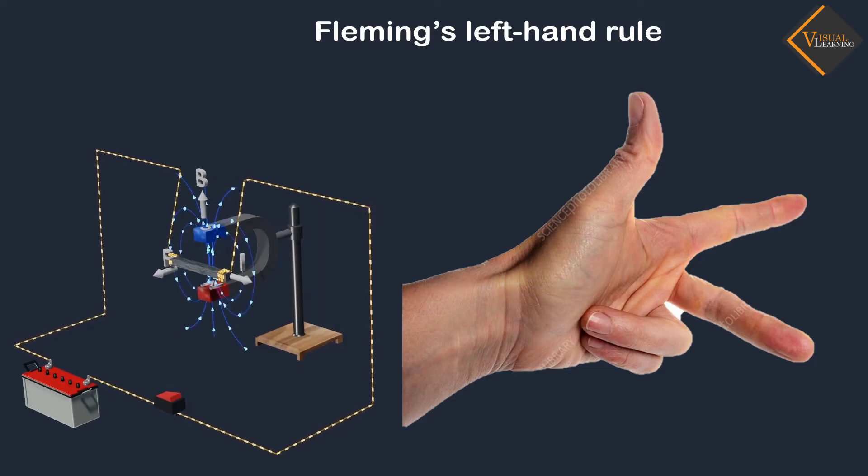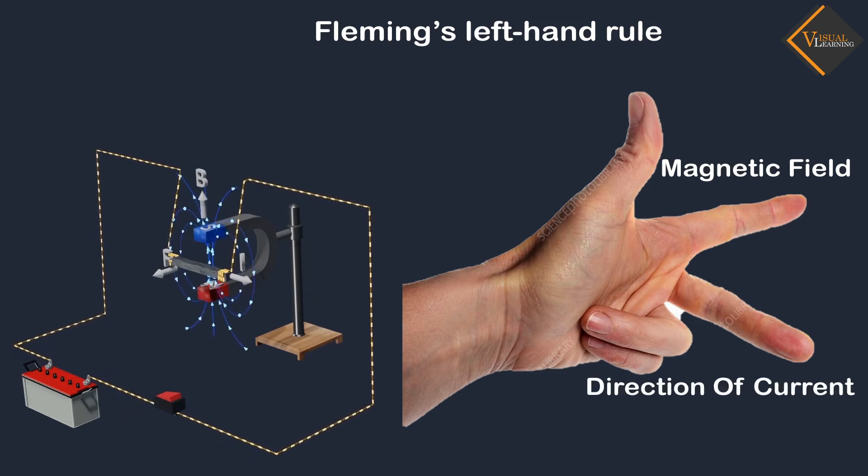If the first finger points in the direction of magnetic field and the second finger in the direction of current, then the thumb will point in the direction of motion or the force acting on the conductor.